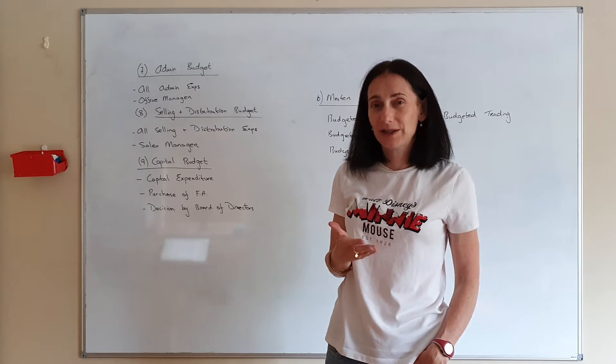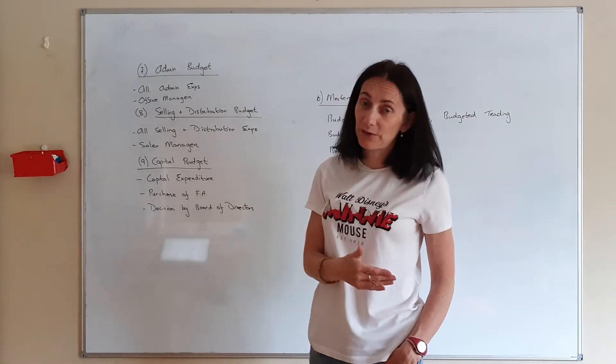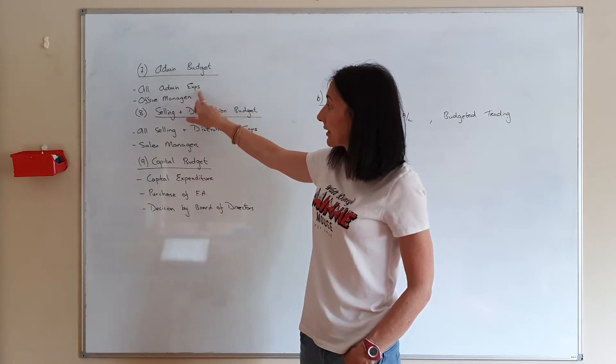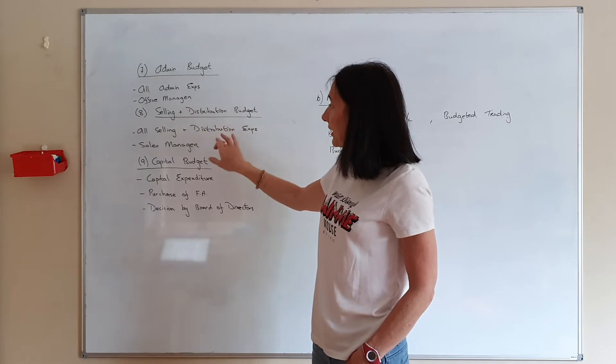loss account. You've got S&D, that's also in your profit and loss account. So it's all your admin expenses - it's the office manager who'd run this. Your S&D budget is your S&D expenses and would be your sales manager who would run that, and then you have your capital budget.